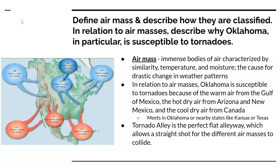Oklahoma is susceptible to tornadoes because of the warm air that comes from the Gulf of Mexico, the hot dry air that comes from Arizona and New Mexico, and the cool dry air from Canada up north. All of these air masses meet up in Oklahoma or nearby states like Kansas or Texas. Oklahoma is part of tornado alley, which is the perfect flat alleyway that allows a straight shot for all these different air masses to collide with each other and create storms.